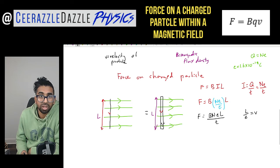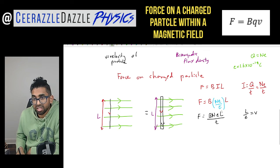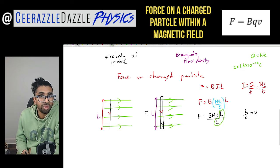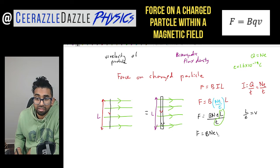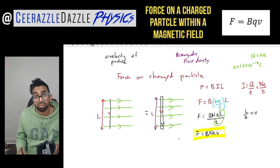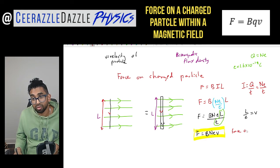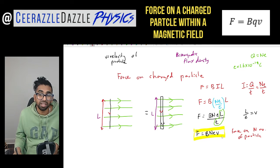I can replace L over t in this part of the equation — that will be equal to V. So therefore my equation becomes F is equal to BNeV. And this is the force on N number of particles. So I can use the formula F is equal to BNeV for N particles.